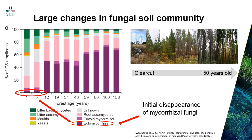Looking at the total fungal community in the soil, the major impact is on the mycorrhizal fungi, as they are dependent on energy from the trees. Here is a study from southern Sweden where stands of different ages of Scots pine were followed by molecular analysis of the fungal community in the soil. There is an initial disappearance of mycorrhizal fungi — they disappear almost totally just after clear cutting — and there is a low proportion after a few years, before they again start to constitute a significant portion of the total fungal community in the soil.